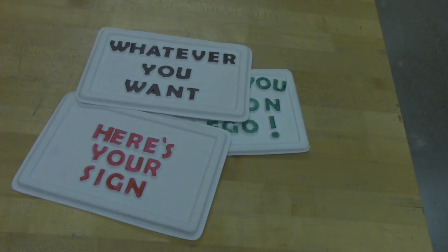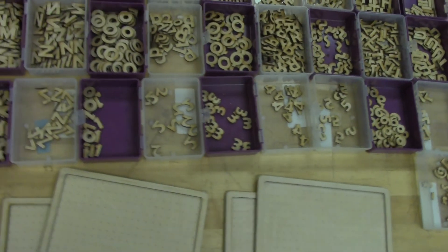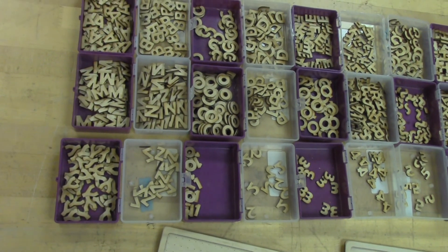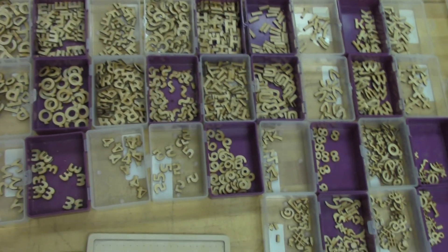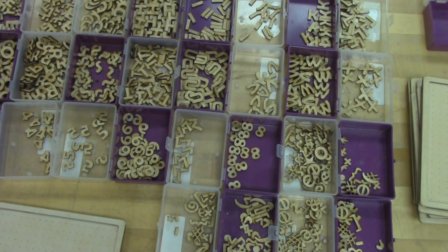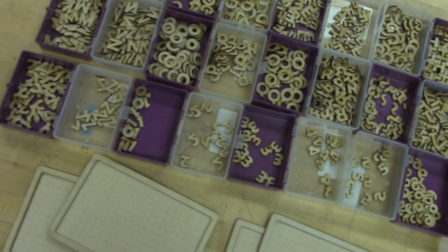The first thing that I did was I made all these letters. All these letters were made on a laser cutter, just cut them out of Baltic birch plywood. So I have every letter of the alphabet.